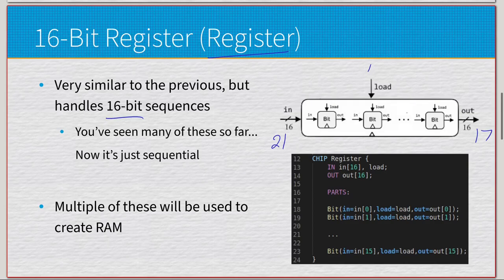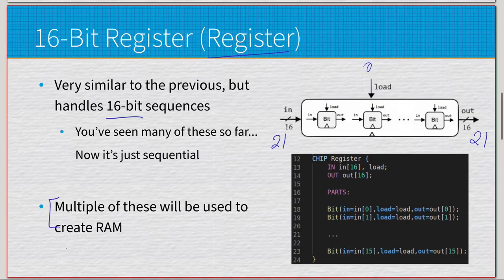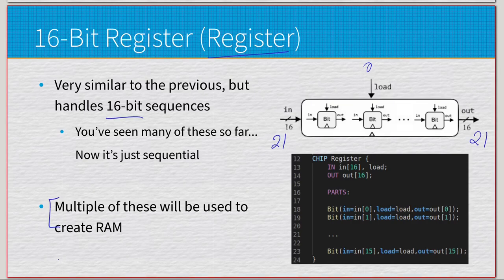Once we set load to one, 21 gets loaded in, and then we store that and go back to zero. It's the exact same thing just at a larger scale — we now have 16 bits to work with instead of just one. Multiple of these are used to create RAM. This 16-bit register is probably the most important gate in terms of overall functionality of our eventual computer, as every part of RAM is constructed from registers, and multiple parts of the CPU are also constructed from registers.